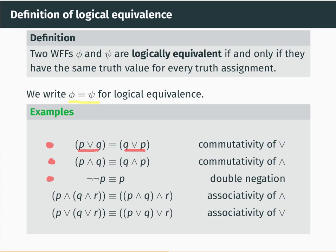Our next example is called double negation. Double negation says that not not P is logically equivalent to P. That's because if P is false, then not not P is also false, and if P is true, then not not P is also true. So P and not not P have the same truth value for any truth assignment to the single propositional variable P.